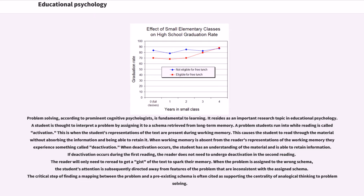When working memory is absent from the reader's representations, they experience deactivation, during which the student understands the material and is able to retain information. If deactivation occurs during the first reading, the reader does not need to undergo it again on a second reading and only needs to re-read to get a gist. When a problem is assigned to the wrong schema, the student's attention is directed away from features inconsistent with that schema. The critical step of finding a mapping between the problem and a pre-existing schema is often cited as supporting the centrality of analogical thinking to problem solving.